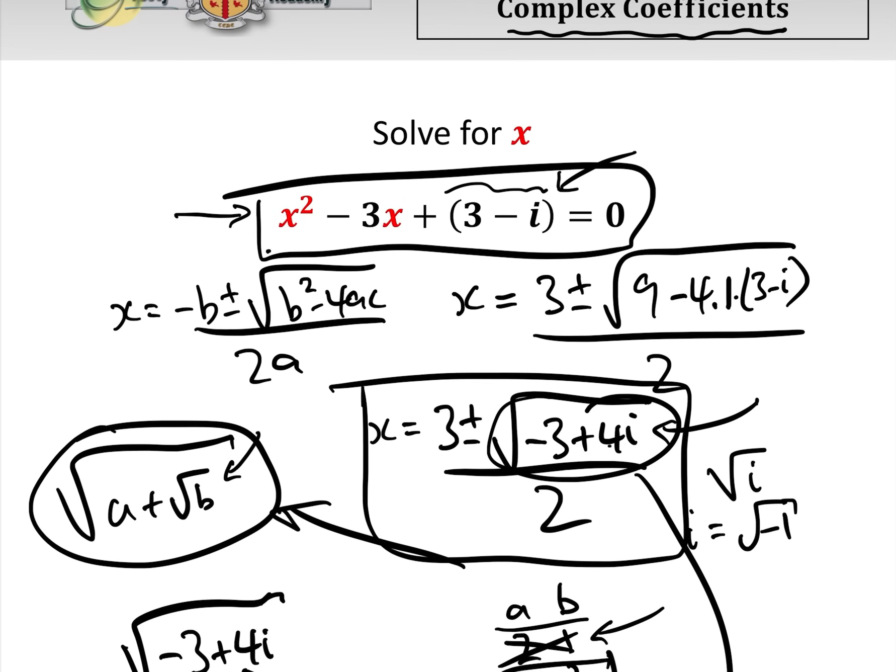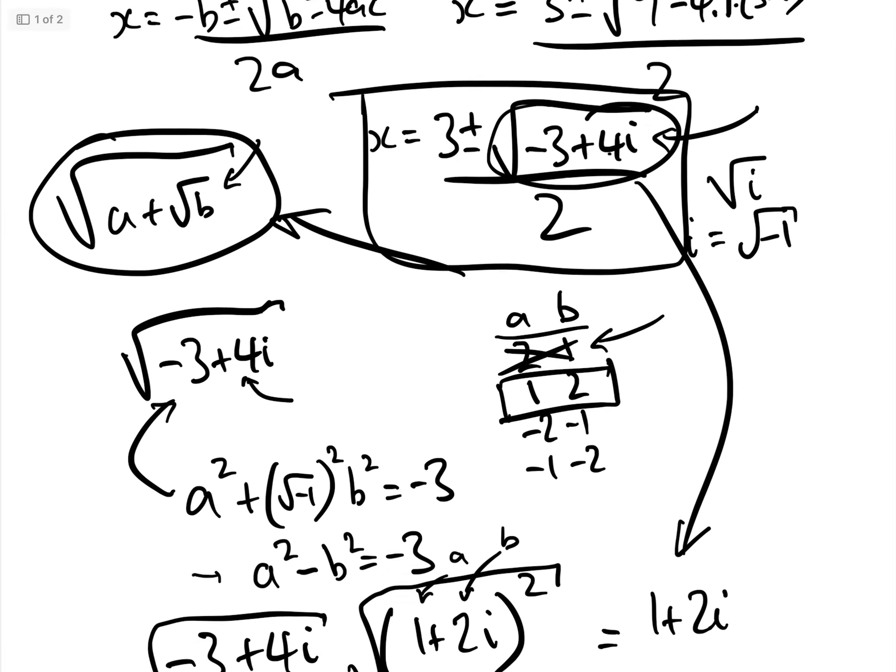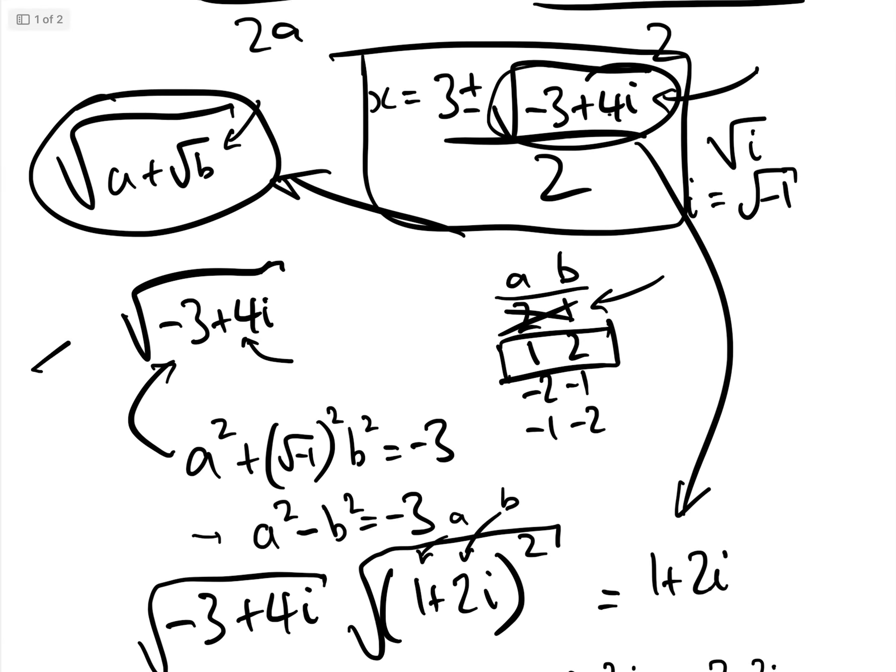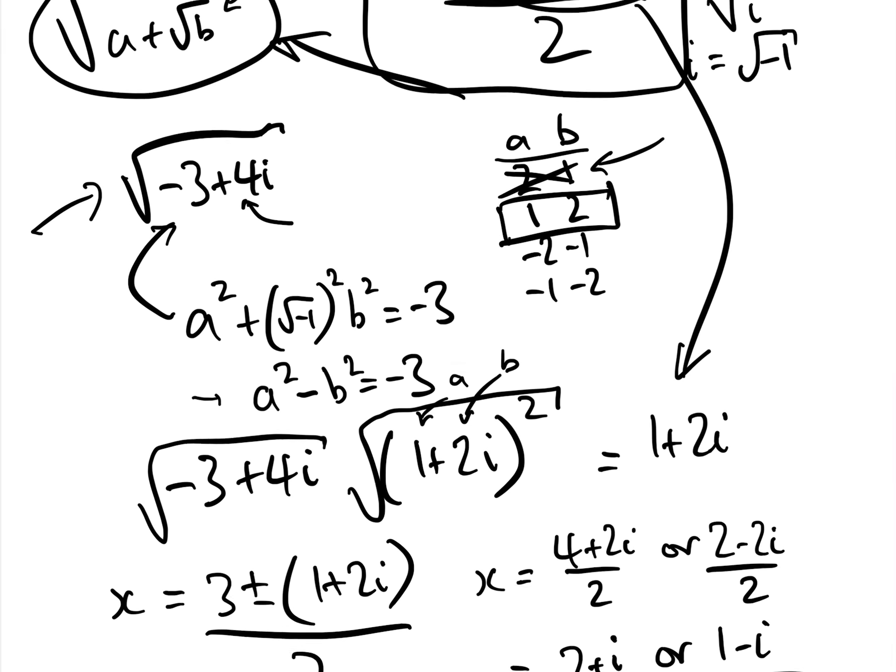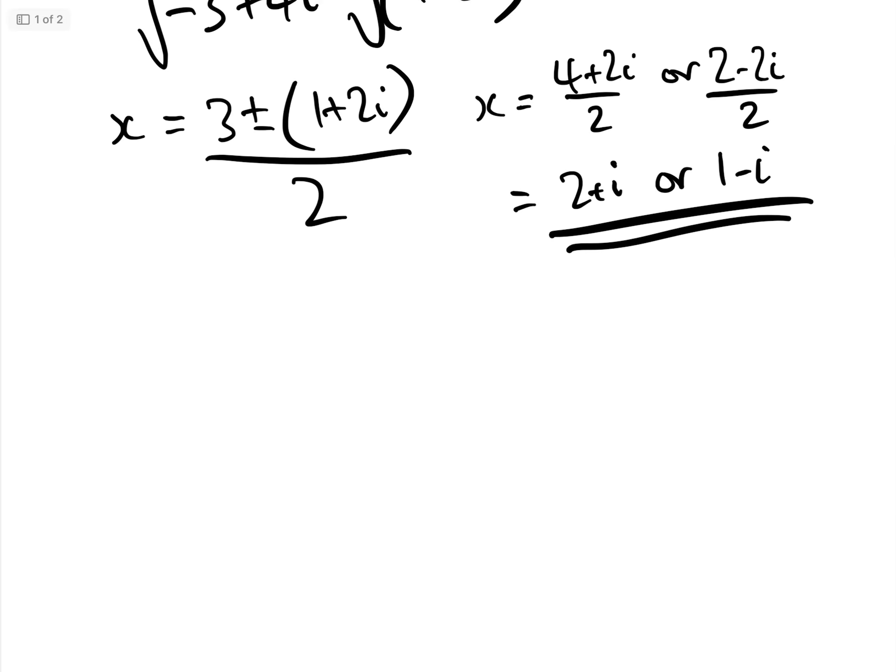Now, in actual fact, just as a little bonus for those who so desire, we can use this method that we've just used here, which we also used on surds. It's always lovely to use the same method to solve different types of equations. We can actually find the square root of i using this method. Well, the square root of i is basically the square root of 0 plus i.